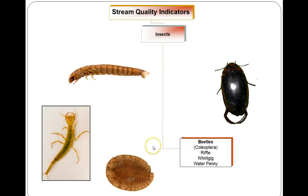So these are a few of the beetles. Beetles can be a little bit more complicated because for a lot of species the larva and the adult both live in the water, so you have to be able to recognize both. For Riverwatch we use the Riffle beetle, Whirligig beetle, and Water Penny beetle as stream quality indicators.